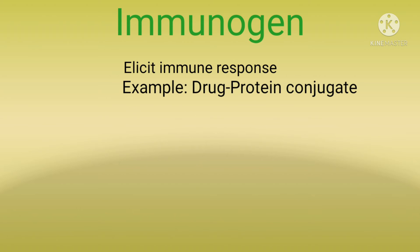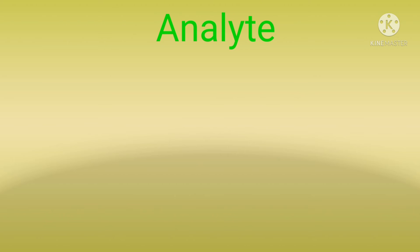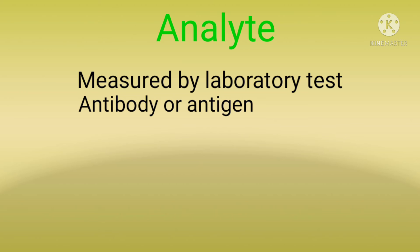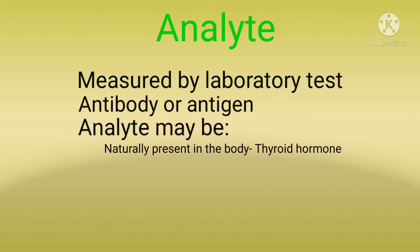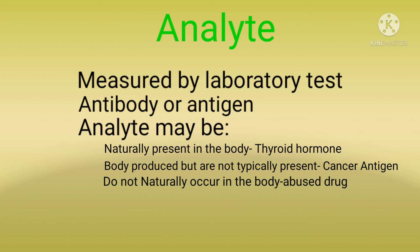Another important topic is the analyte. An analyte is what is measured by a laboratory test. In immunoassay testing, the analyte may be either an antibody or an antigen. Immunoassays utilize one or more selected antibodies to detect the analyte of interest. The analytes being measured may be naturally present in the body such as a thyroid hormone, produced by the body but not typically present such as a cancer antigen, or not necessarily occurring in the body such as an abused drug.